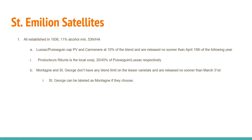The Saint-Emilion satellites are the outlying regions to the northeast and east of Saint-Emilion, following the Barbonne River and between the Barbonne and Dordogne to the east. Established in 1936 with the same minimum ABV and yield. Lussac and Puisseguin cap Petit Bordeaux and Carmenère at about 10% of the blend, with a release date no sooner than April 15th. About 20 to 40% of Puisseguin and Lussac production goes into the local co-op called Producteurs Réunis. Montagne and Saint-Georges have no blend limit on lesser varieties and are released no sooner than March 31st. Saint-Georges may label itself as Montagne if it chooses.